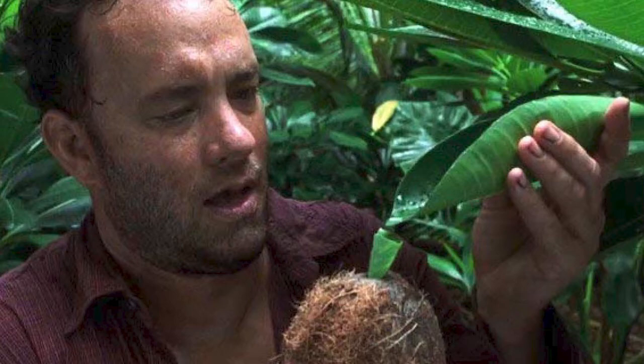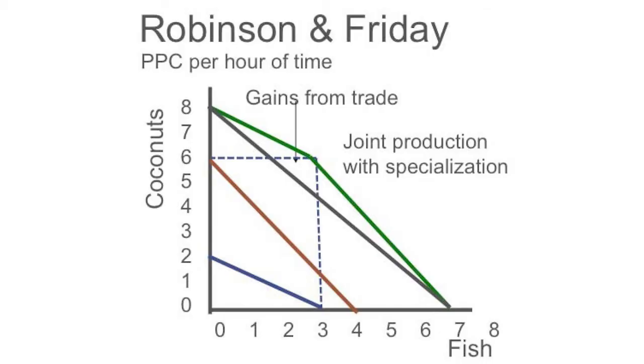The social problem begins when Friday shows up on the island as well. Friday is very good at fishing. Remember, we discussed earlier how Crusoe and Friday might coordinate their activities to their mutual benefit by each specializing in his comparative advantage — that is, each has an activity for which he has a lower opportunity cost than the other. Then they meet together to exchange, boosting their productive possibility constraint by doing so.